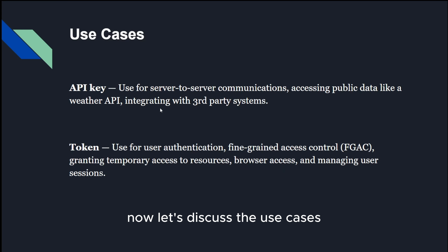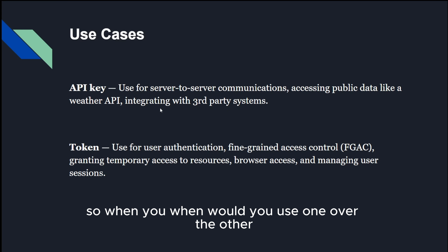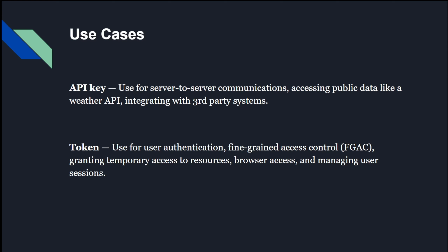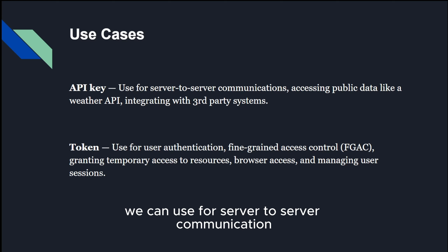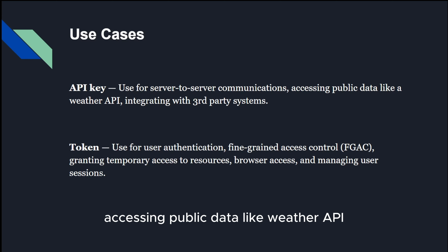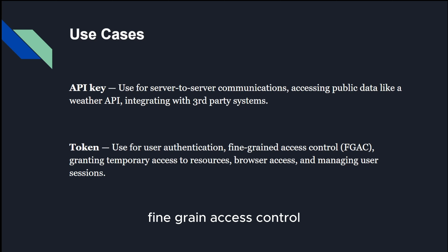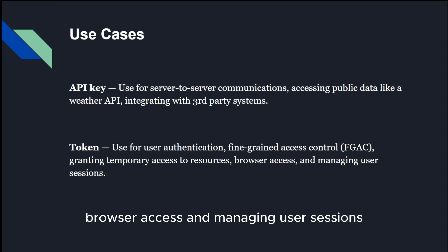Now let's discuss the use cases — when would you use one over the other? It looks like they have a good balance of pros and cons. API keys are used for server-to-server communication, accessing public data like a weather API, and interaction with third-party systems. Whereas tokens are used for user authentication, fine-grained access control, granting temporary access to resources, browser access, and managing user sessions.